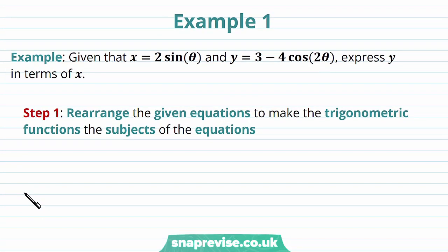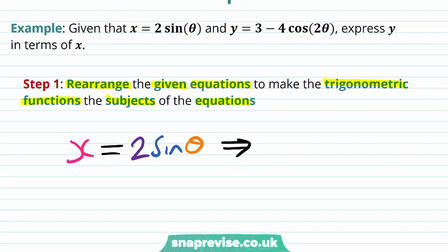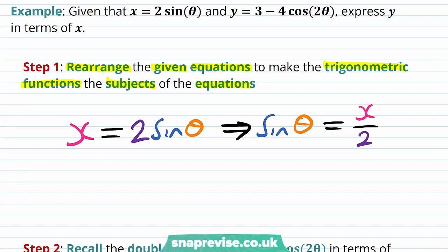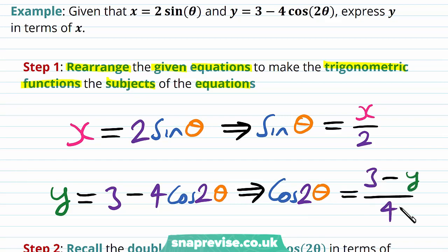Let's take a look at some examples. Our first example tells us that given x equals 2 sin theta and y equals 3 minus cos of 2 theta, we're asked to express y in terms of x. Our first step is to rearrange the given equations to make the trigonometric functions the subject. Rearranging gives sin theta equals x over 2, and cos of 2 theta equals 3 minus y over 4.